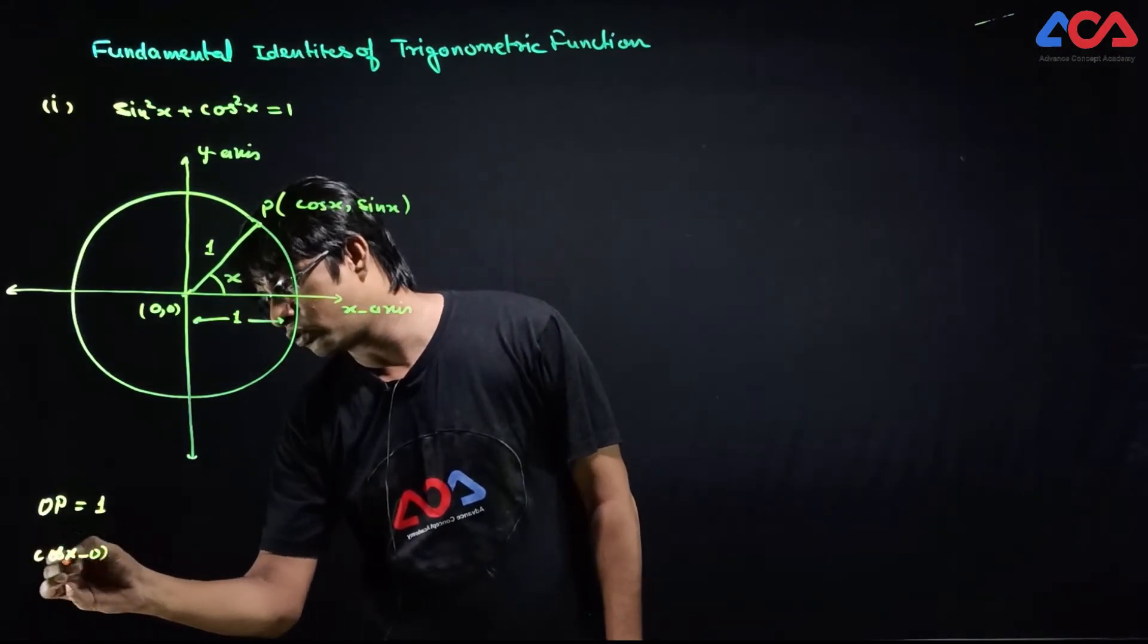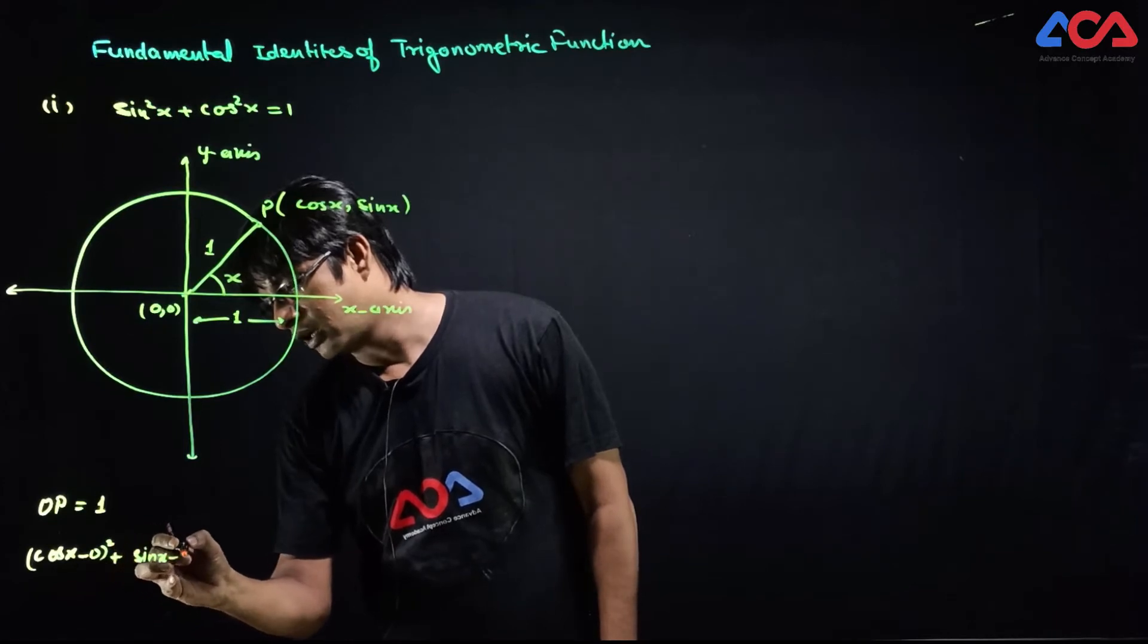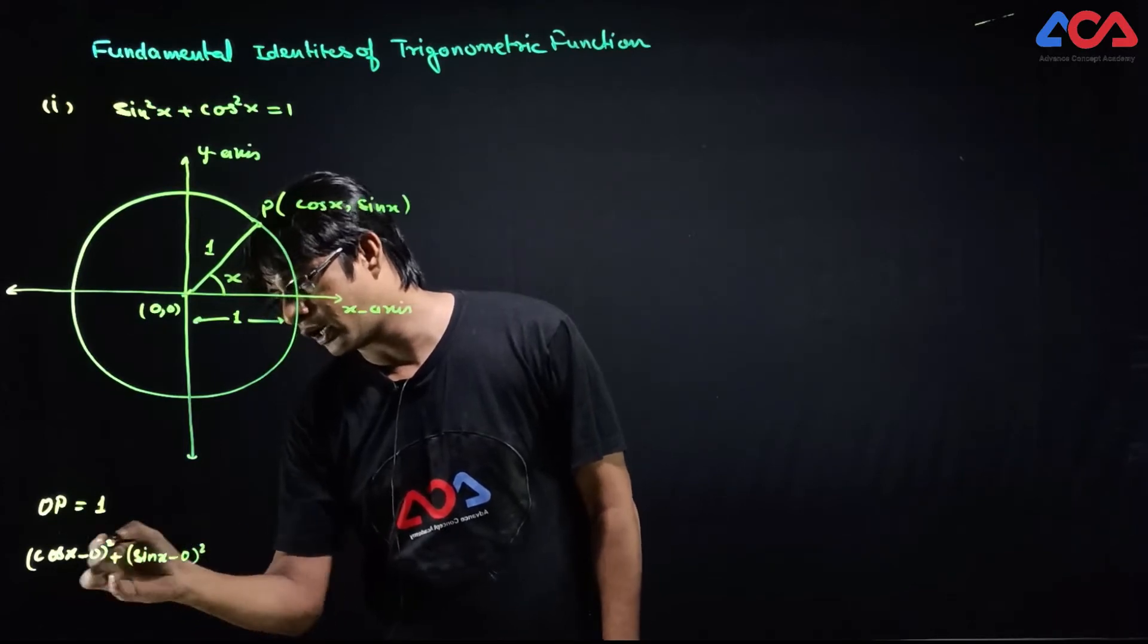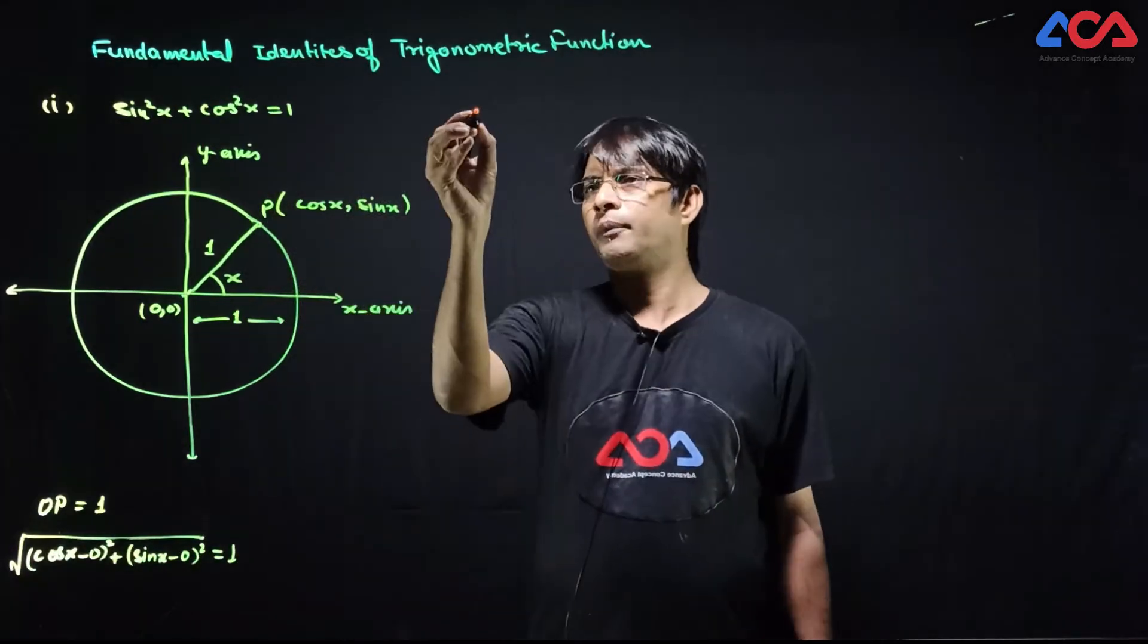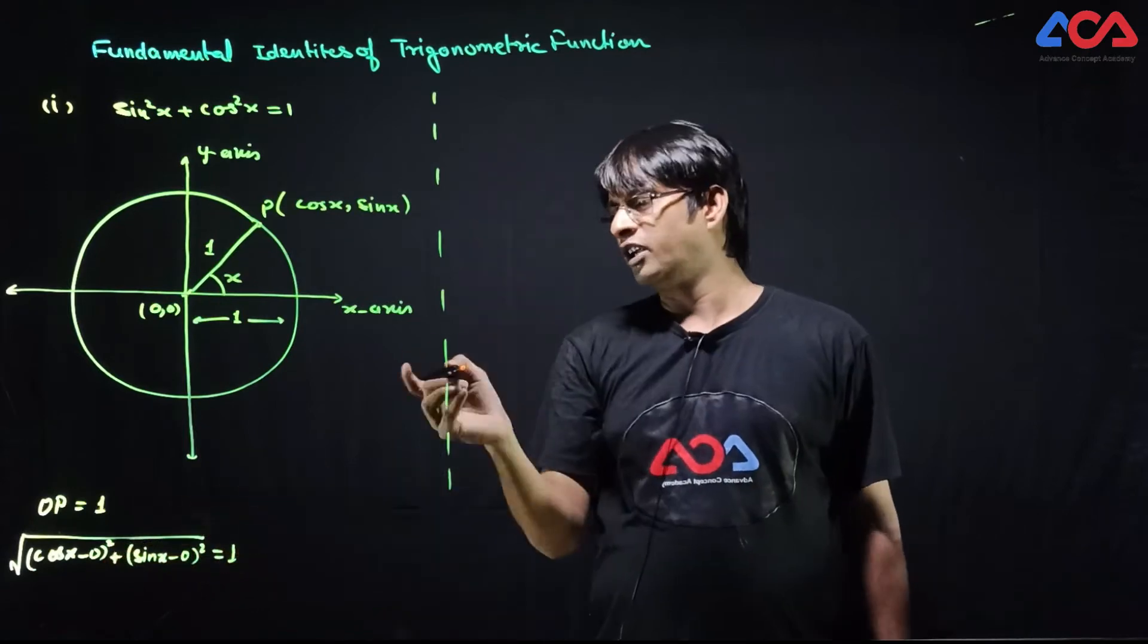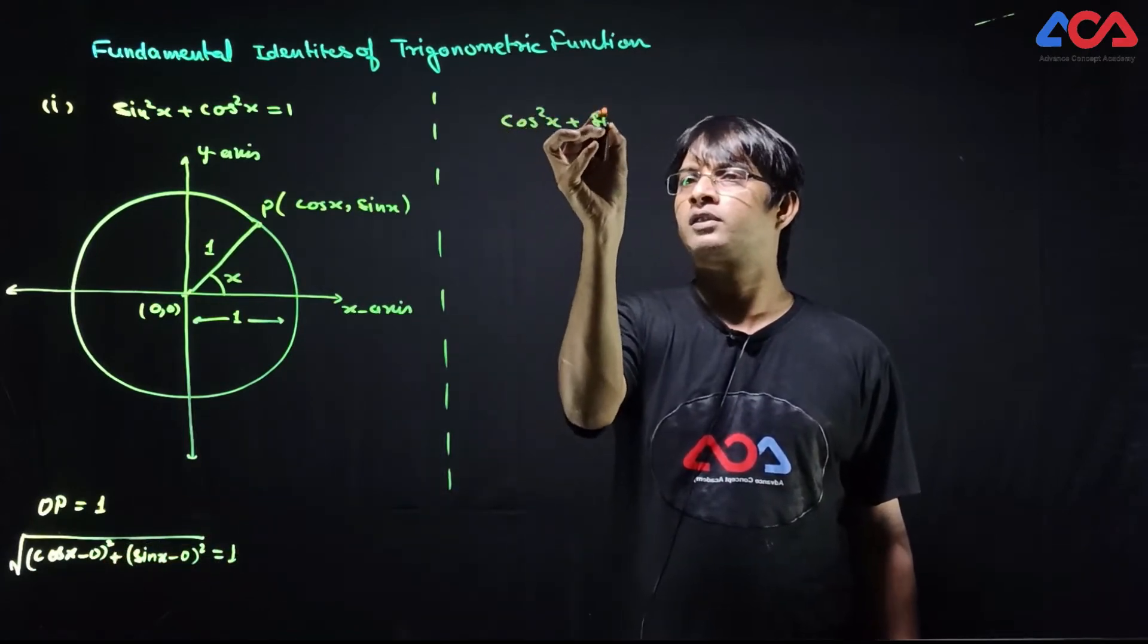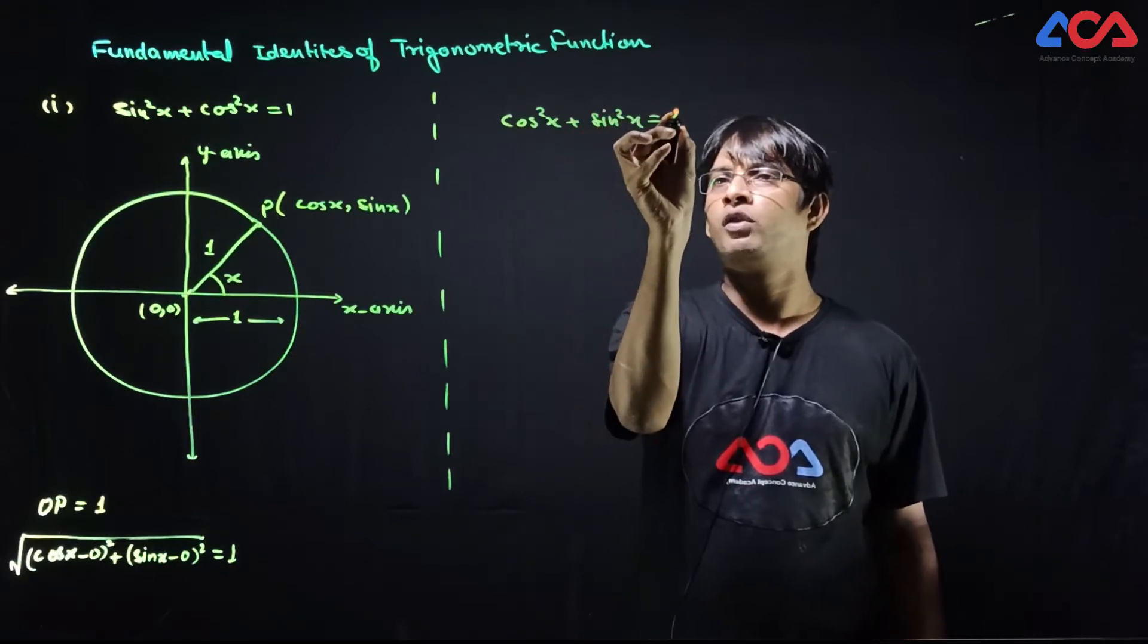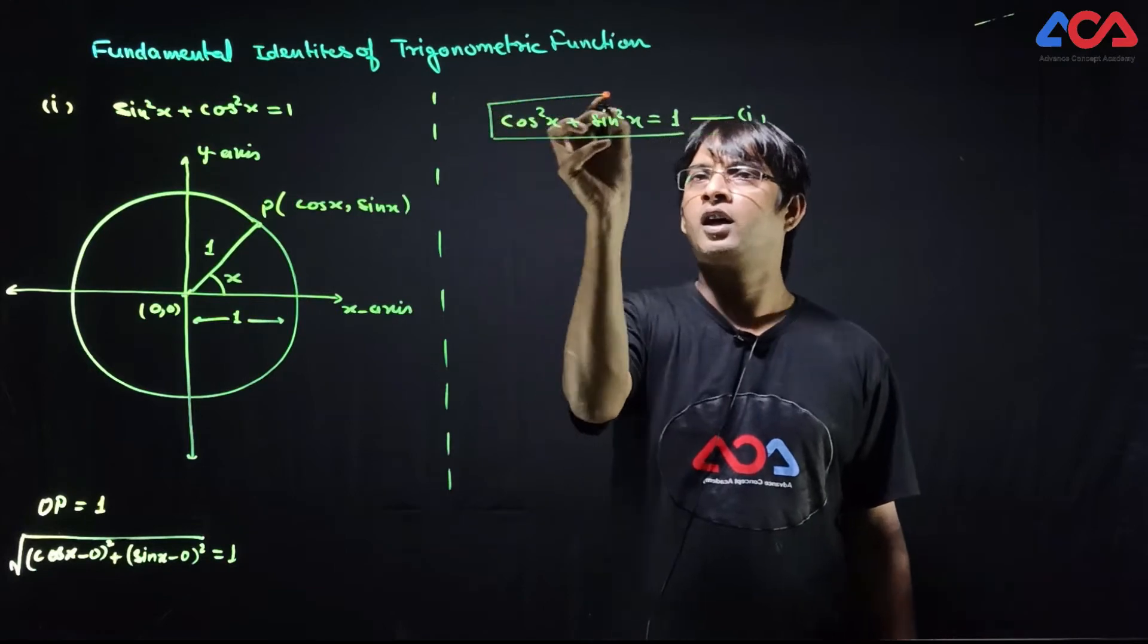√[(cosx - 0)² + (sinx - 0)²] = 1. Squaring both sides, we find cos²x + sin²x = 1. First identity, we have proved.